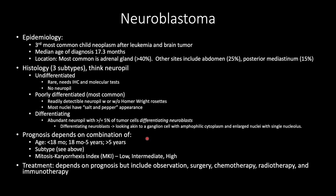Prognosis depends on a combination of age — less than 18 months, 18 months to 5 years, or greater than 5 years, which carries worse prognosis — subtype (undifferentiated, poorly differentiated, and differentiating), and mitosis karyorrhexis index with low, intermediate, or high categories. Treatment depends on prognosis but includes observation, surgery, chemotherapy, radiotherapy, and/or immunotherapy.